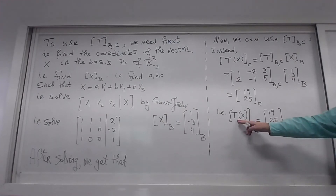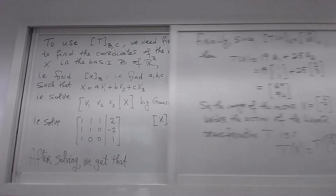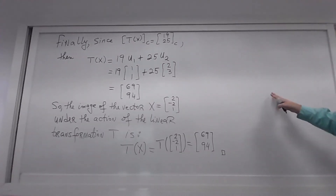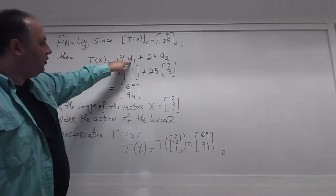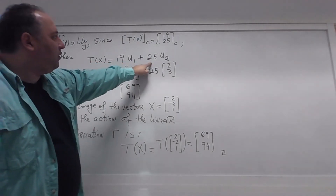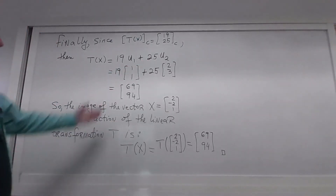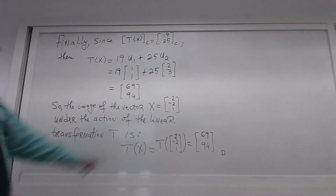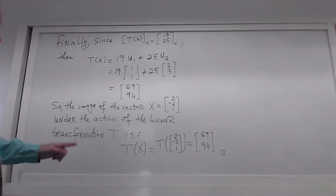We're almost there. Using the definition of coordinates: since the coordinates of T(x) in basis C are 19 and 25, this means T(x) = 19·u1 + 25·u2. We plug in u1 and u2 and compute the result. The image of the vector (3, -2, 1) under T is the vector (69, 94).